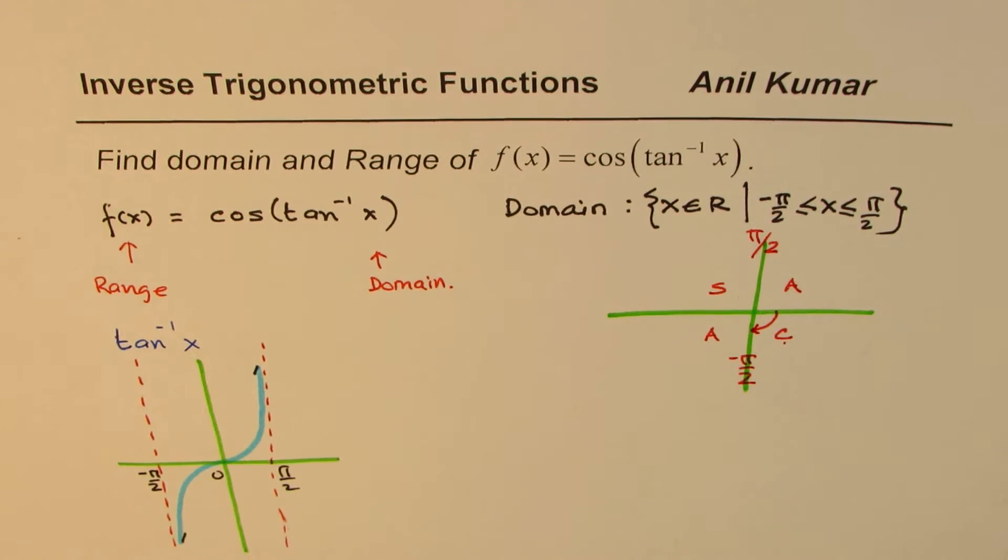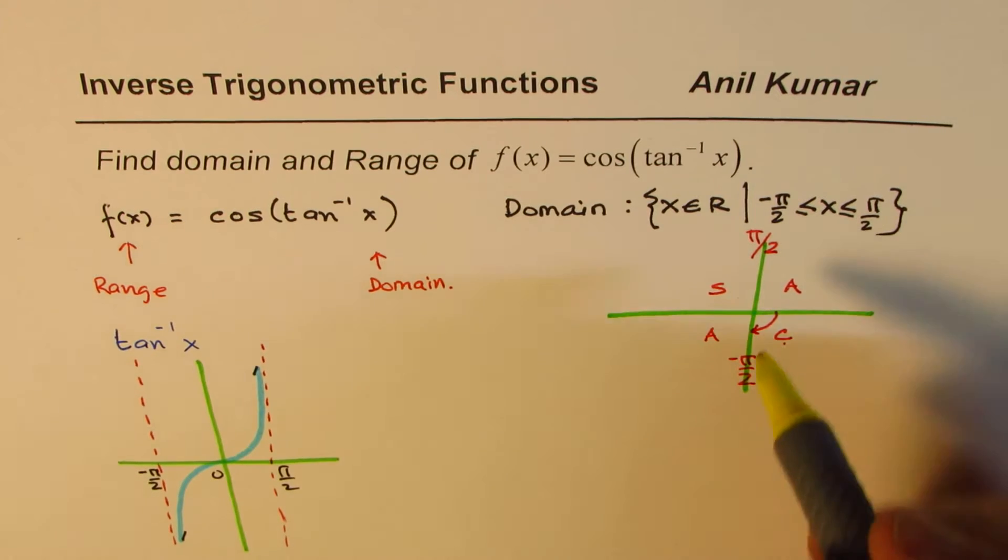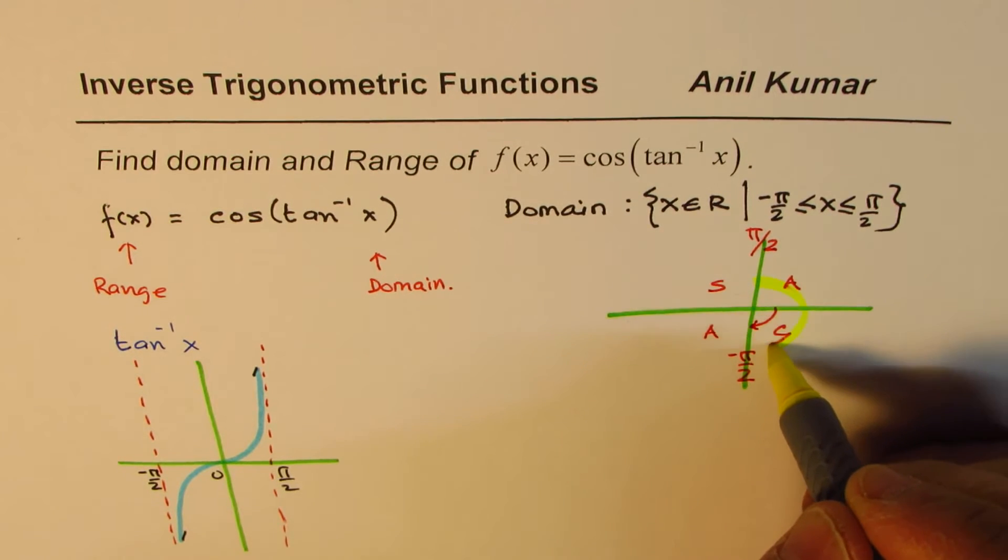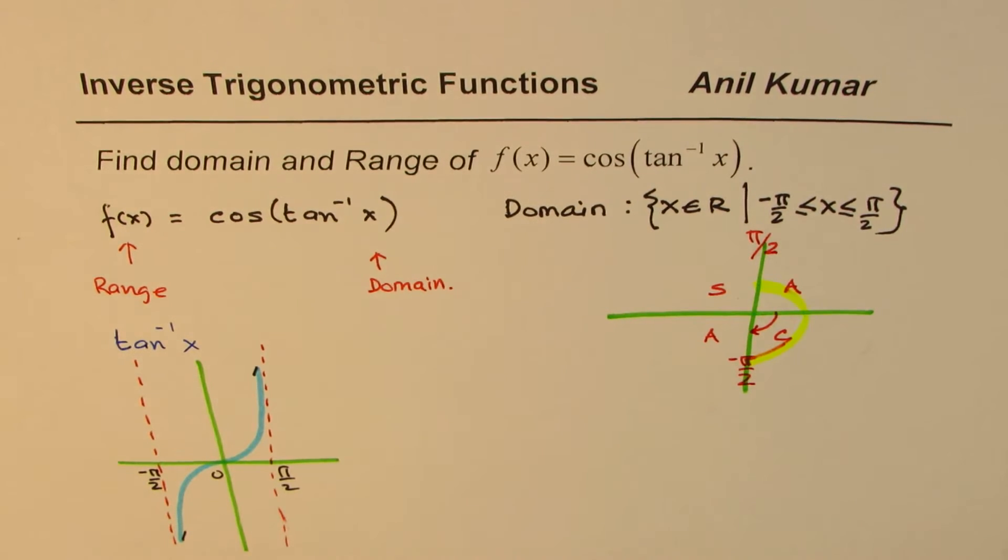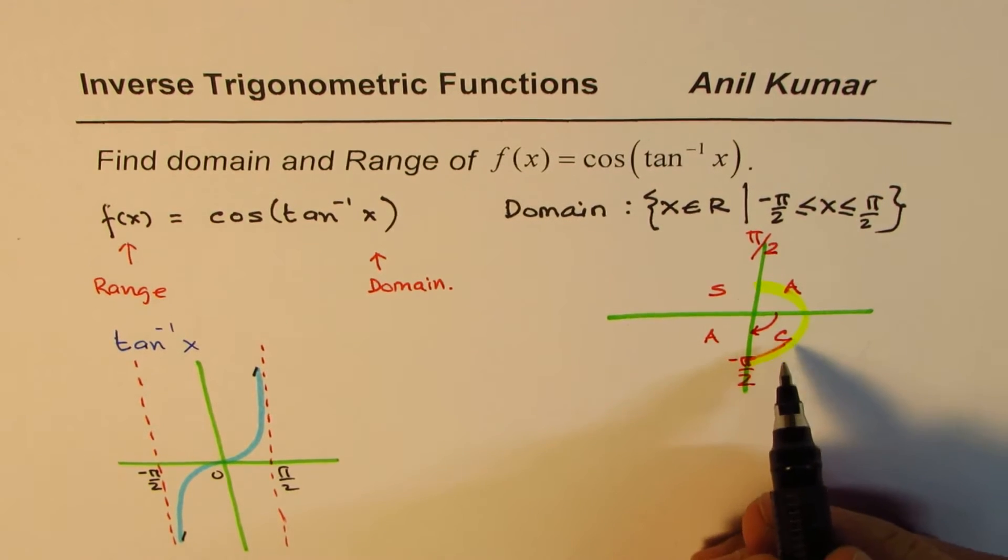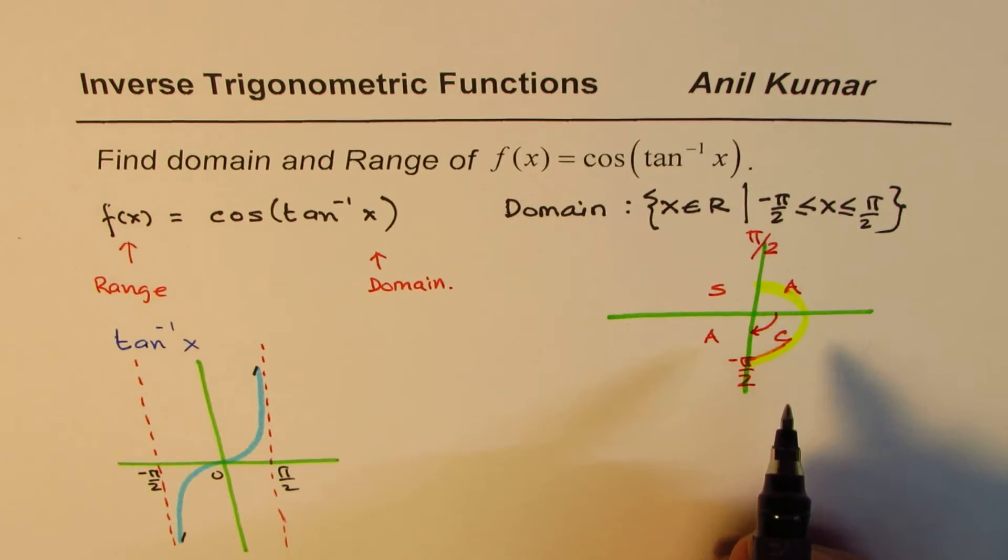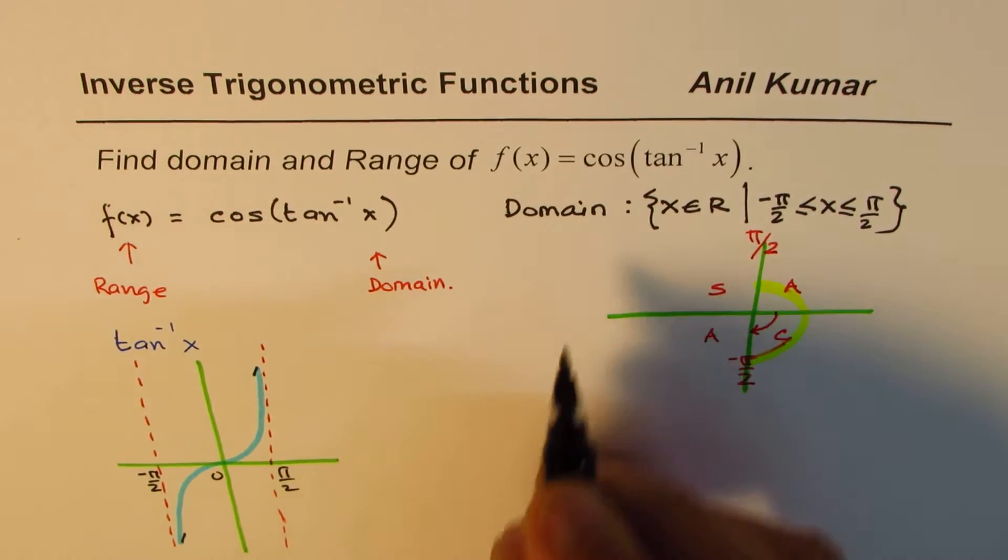As you can see, in this domain of -π/2 and +π/2, cos is always positive. Cosine function is always positive. It could be 0, but it is non-negative. Cos is positive.